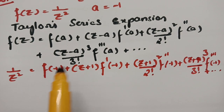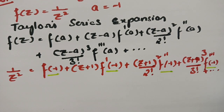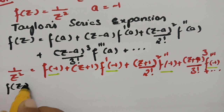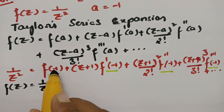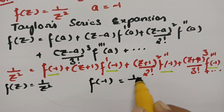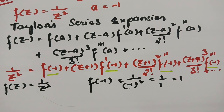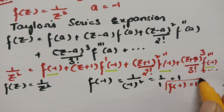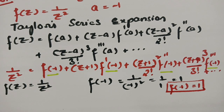Now we have to get the values of f(−1), f'(−1), f''(−1), f'''(−1), and so on. Our f(z) is 1/z². So f(−1): substituting z = −1 gives 1/(−1)² = 1/1 = 1. Therefore f(−1) = 1.